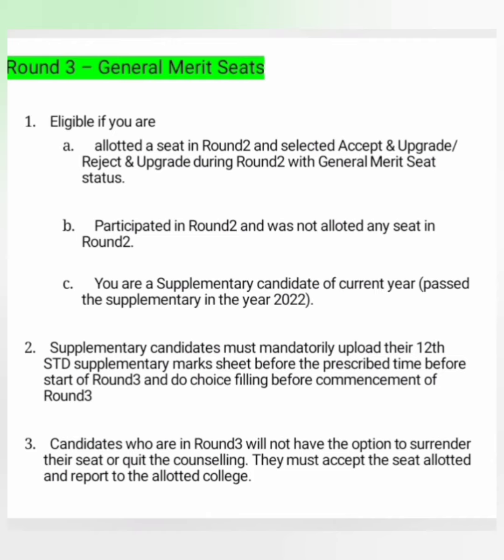Third, supplementary candidates are also allowed to sit in Round 3, but they will have to mandatorily upload their 12th class supplementary mark sheet in order to participate. Importantly, candidates in Round 3 do not have any option to surrender their seat or quit the counselling. Whatever seat they get in Round 3, they have to accept it and report to the allotted college. There is no option for any type of refund or money back. That covers all the updates on Round 2 Phase 2 and Round 3.